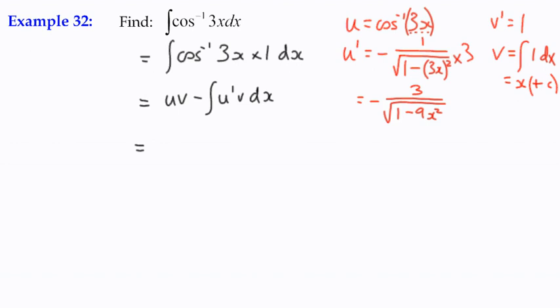So u is the inverse cos of 3x multiplied by v, which is just x. I'm actually going to write them down in the opposite order, minus the integral of u dash v, u dash times v, that's x. So I've got a negative term here, I'm going to make that plus, and I'm going to make 3x. In fact, I'm going to put the 3 as a constant term outside as well. And I'm left with x times the square root of 1 minus 9x squared with respect to x.